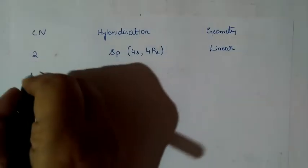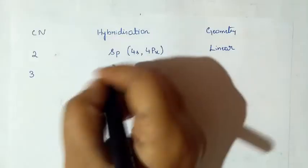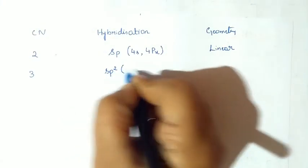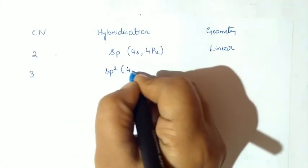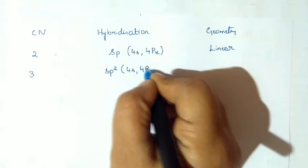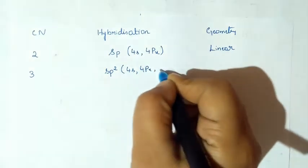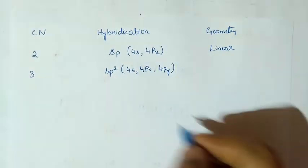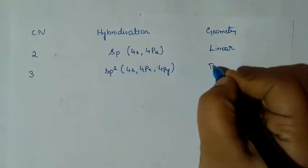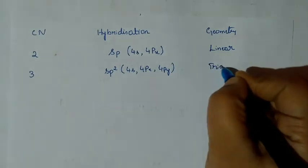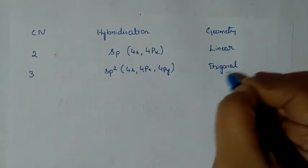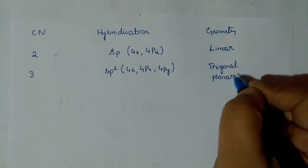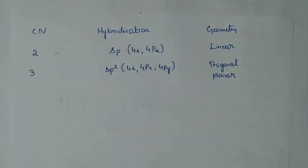If the coordination number is 3, then it is SP2 hybridization. The orbitals involved are 4S, 4PX, and 4PY, and we have trigonal planar geometry.